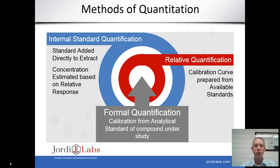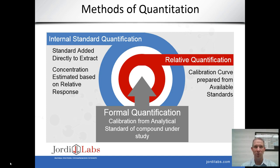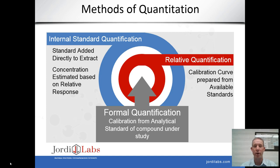I'm going to contrast three different quantitation methods. The first is internal standard quantification, in which we spike an internal standard into our sample and then quantitate all the species we see relative to that internal standard. I'll also describe relative quantitation, in which we use a surrogate compound to analyze for one of the compounds under study using an external calibration curve. And lastly, formal quantitation, in which we use an actual reference standard of the compound of interest to quantitate these species.